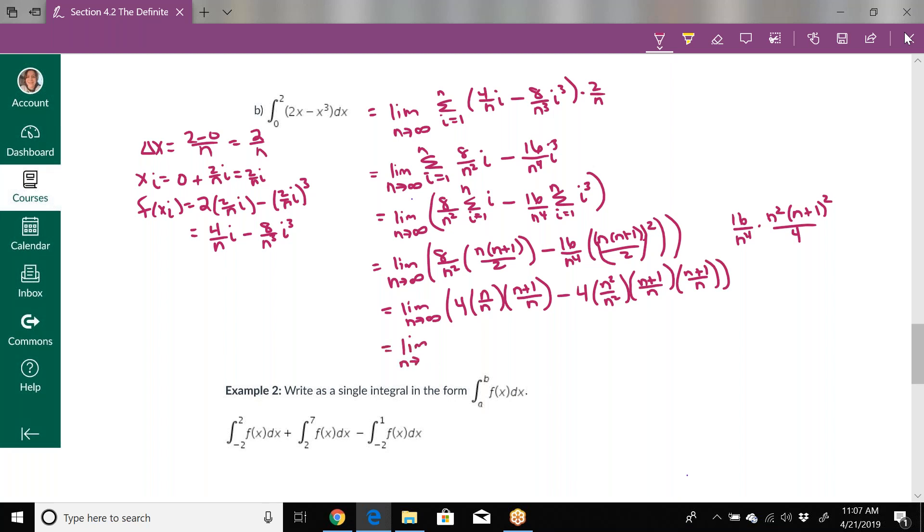This is limit as n approaches infinity of 4 times 1 plus 1 over n minus 4 times 1 plus 1 over n squared. When we're doing limits as n approaches infinity and we have 1 over n, that goes to 0. So this is 4 times 1 because this is plus 0, minus 4 times 1 squared, because that's 1 plus 0. That's 4 minus 4, so the answer here is 0.